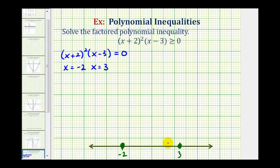Let's use the test values x = −3 for the left interval, x = 0 for the middle interval, and x = 4 for the right interval.